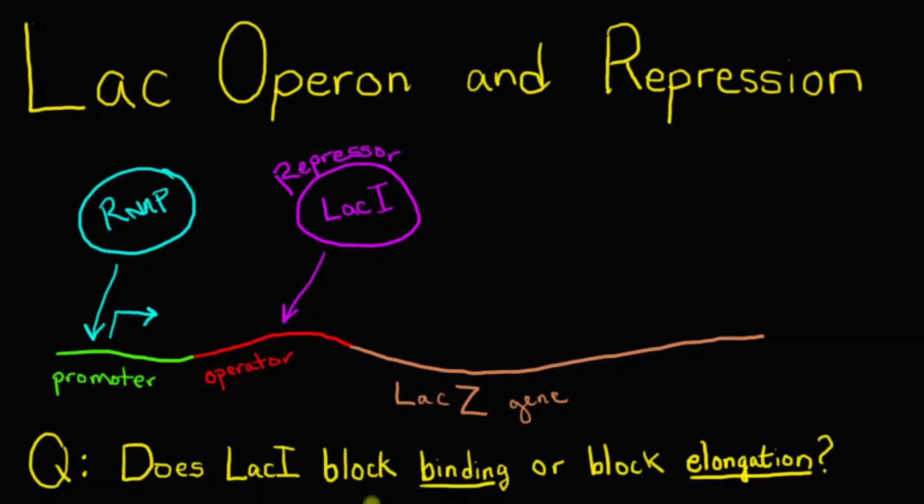Is it the case that the repressor blocks the binding of RNA polymerase, in which case you would just see that RNA polymerase is unable to even bind to the promoter? Or does the repressor block transcription elongation, in which case RNA polymerase would be able to bind to the promoter, it just would not be able to actually create a transcript?